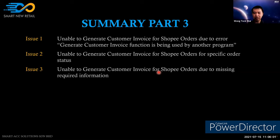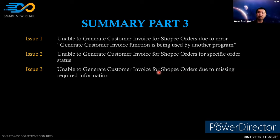Question: in what situation would you manually download products and orders when the process manager also downloads them? One situation is when the process manager is not functioning correctly and you cannot get the latest products or orders from the server. In that case, you can manually download from the workstation.